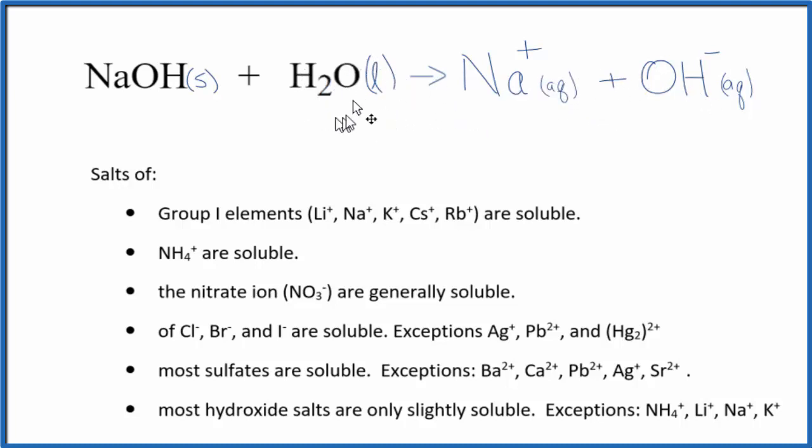Sometimes you'll see the H2O here, put above the arrow, to show that it's involved in this dissolution, this dissolving here, but it's not chemically changed. Either way, this is the net ionic equation for NaOH plus H2O.